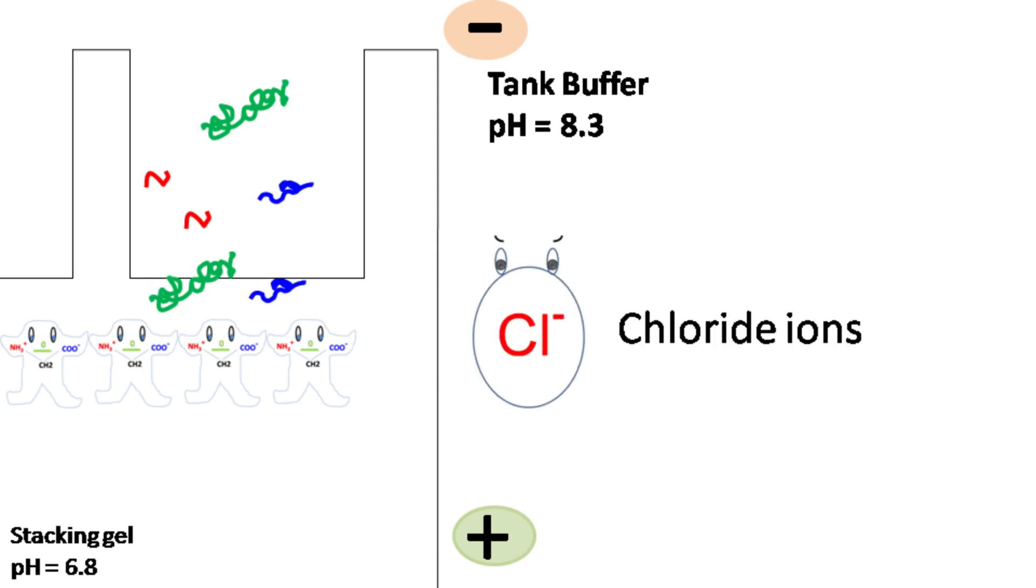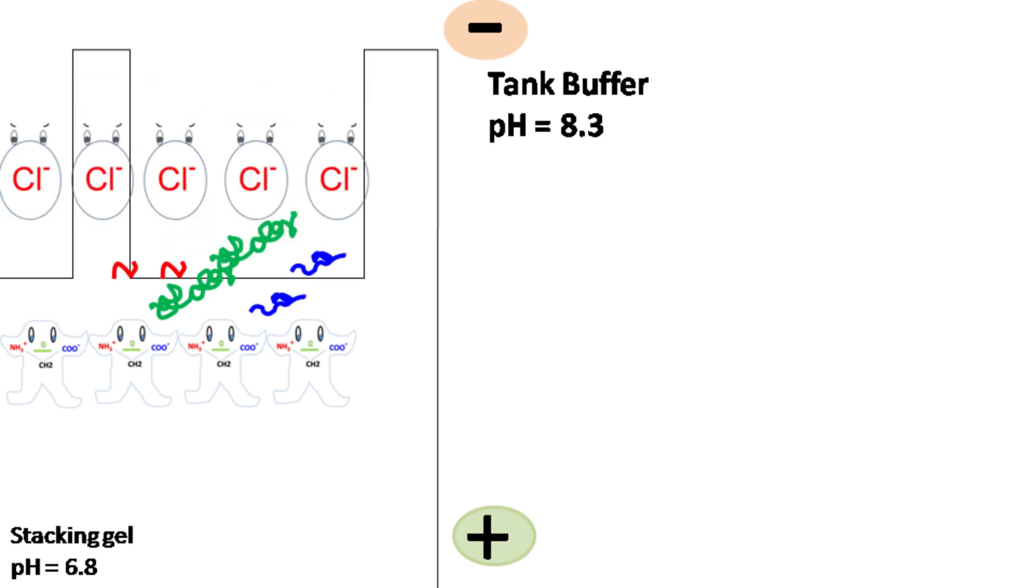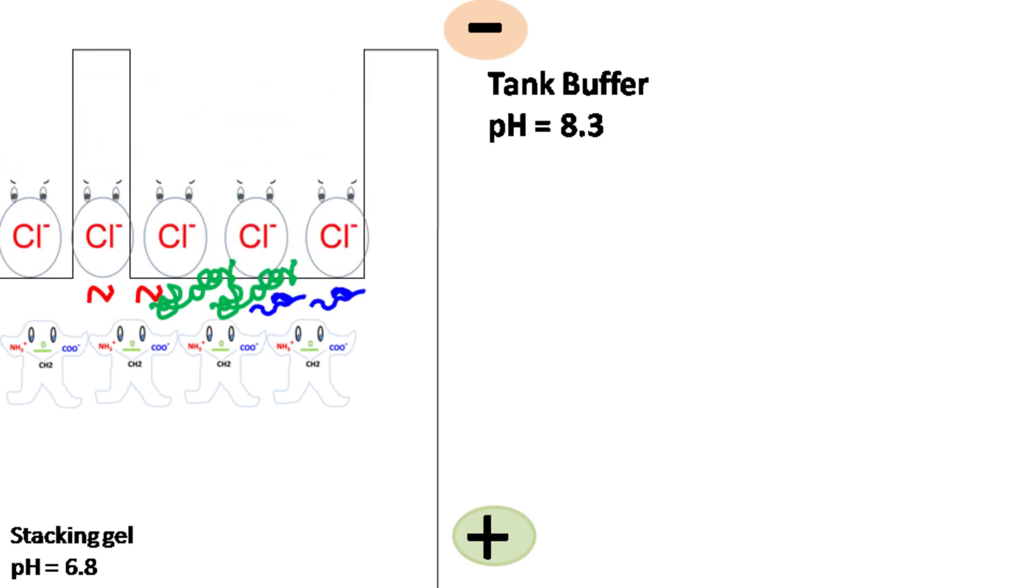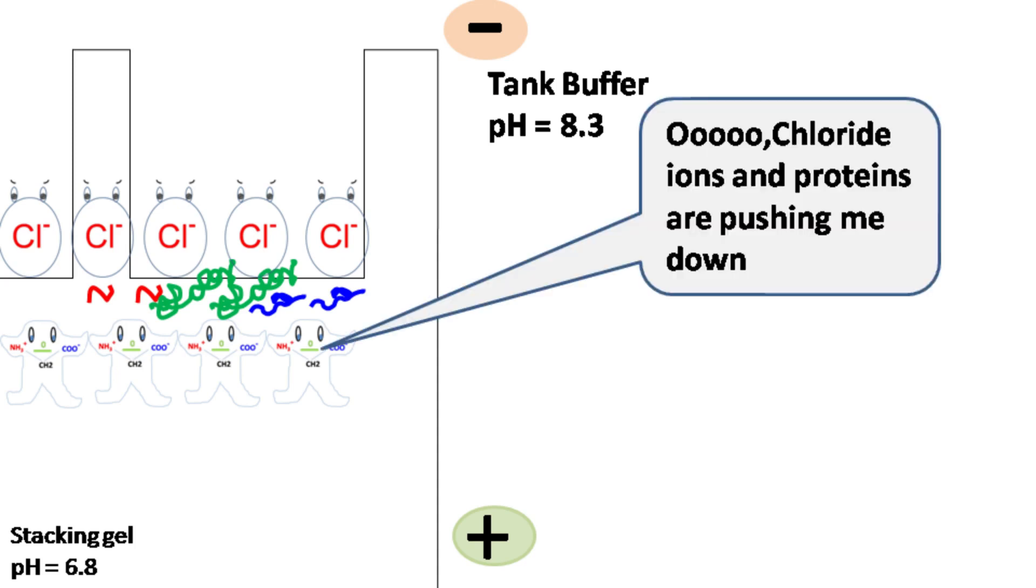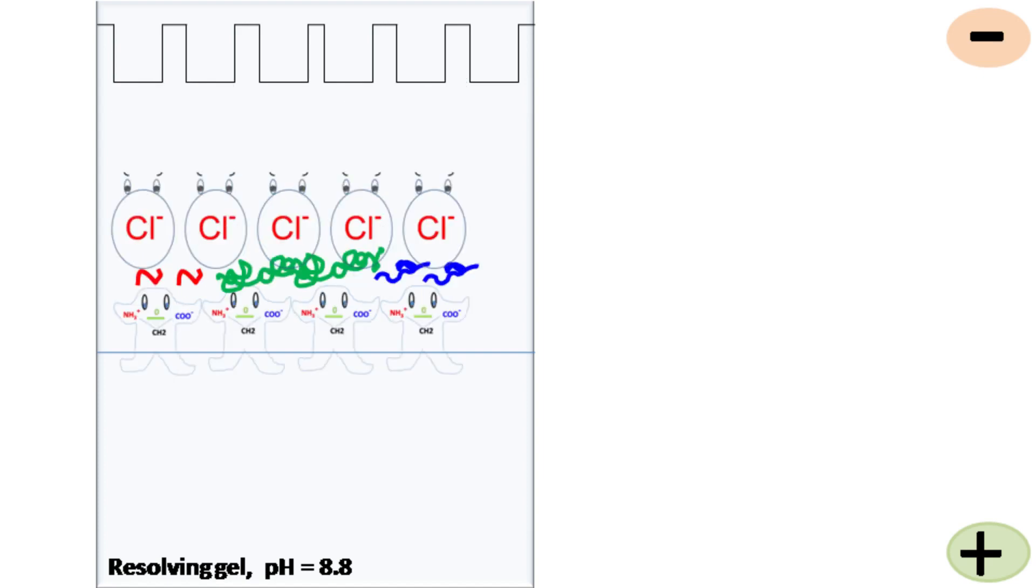Besides this, chloride ions irrespective of the pH are gonna have a net negative charge. So the chloride ions push all the proteins forward, whereas the glycine molecules resist the movement of proteins. As a result of this, the protein molecules are sandwiched between glycine and chloride ions. And this sandwiching of proteins continues till they reach the resolving gel.